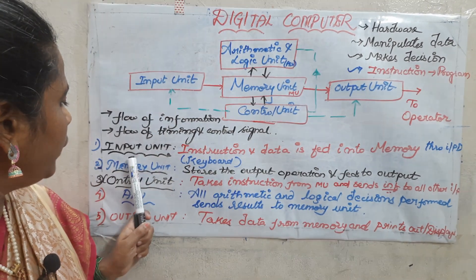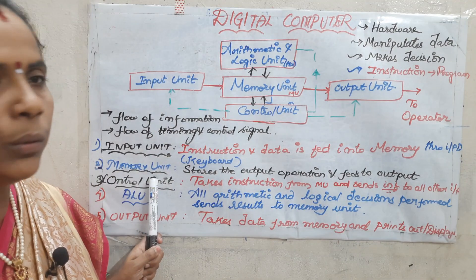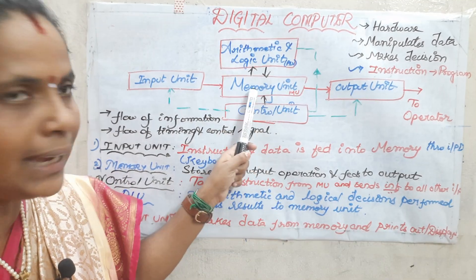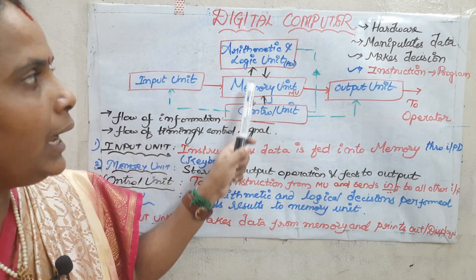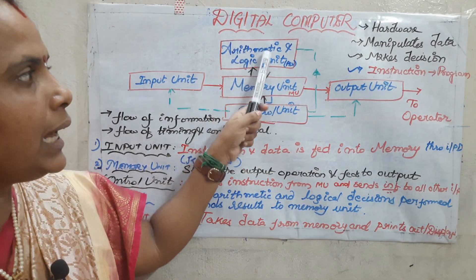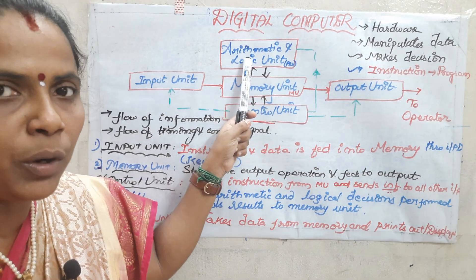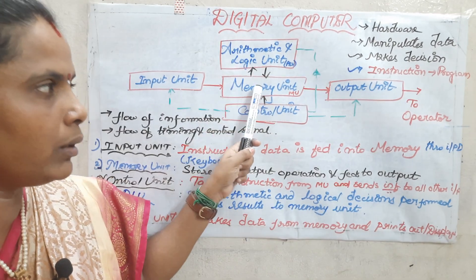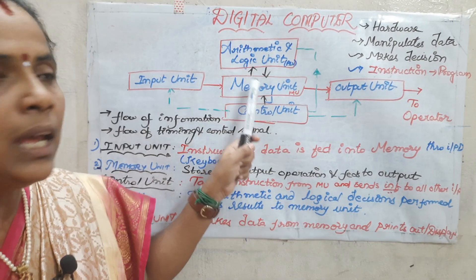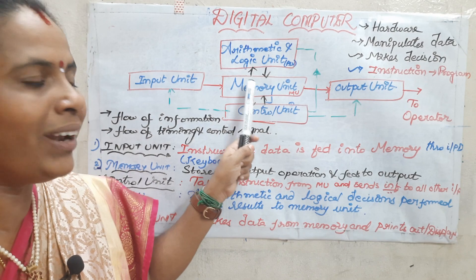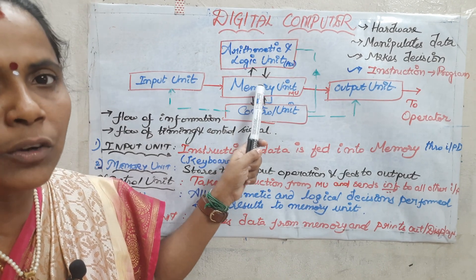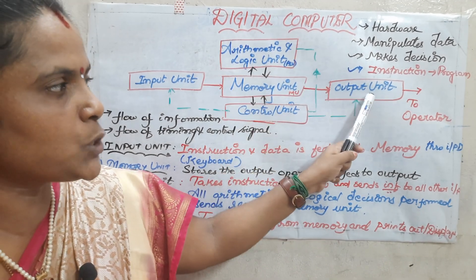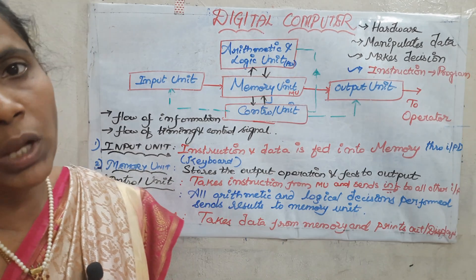Next, we will move on to the memory unit. The memory unit stores the data — suppose any arithmetic or logical operations have been performed, the results will be stored in the memory unit. As and when required, depending upon the control signal received, it will be transferred to the output.